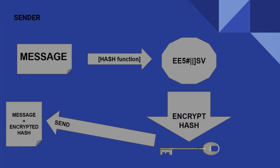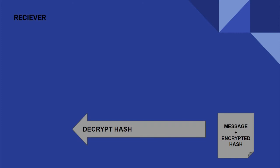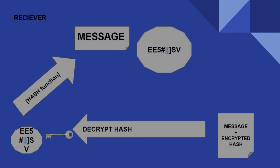The encrypted hash is appended to the message. On the receiver's side, the receiver gets the message plus the encrypted digest, or the hash. The receiver then decrypts the hash using the sender's public key to reveal a hash, or a digest. The receiver's software then performs the same hashing function on the original message to produce a digest.